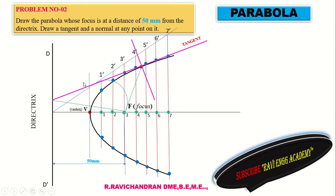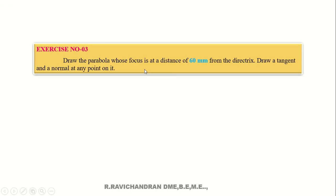To fix the normal line accurately, use a mini-drafter scale or an L-shaped scale. Place the L-shaped scale along the line to ensure the normal is exactly perpendicular. Fix the line - this is the normal. Thank you.